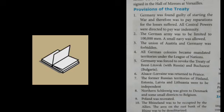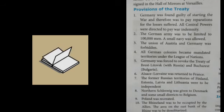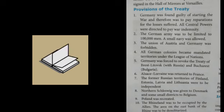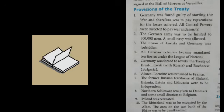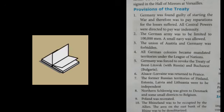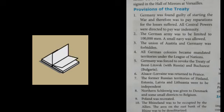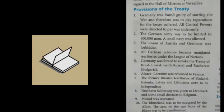Provisions of the Treaty: First — Germany was found guilty of starting the war and was to pay reparations for losses of war. All Central Powers were directed to pay war indemnity — that is, compensation. Second — the German army was limited to one lakh men; a small navy was allowed.